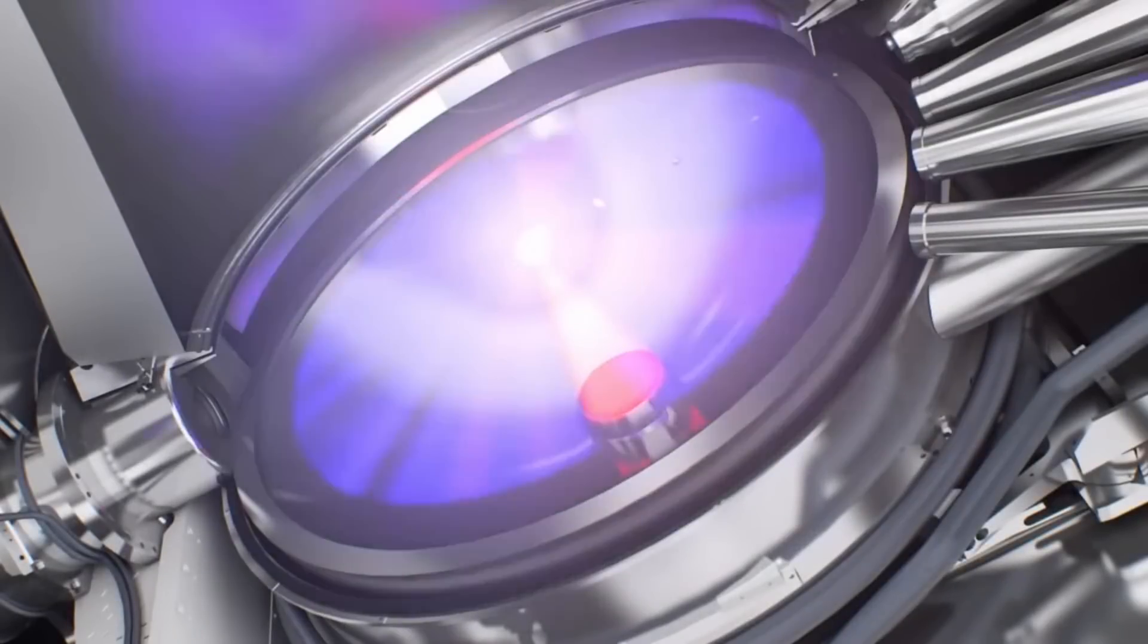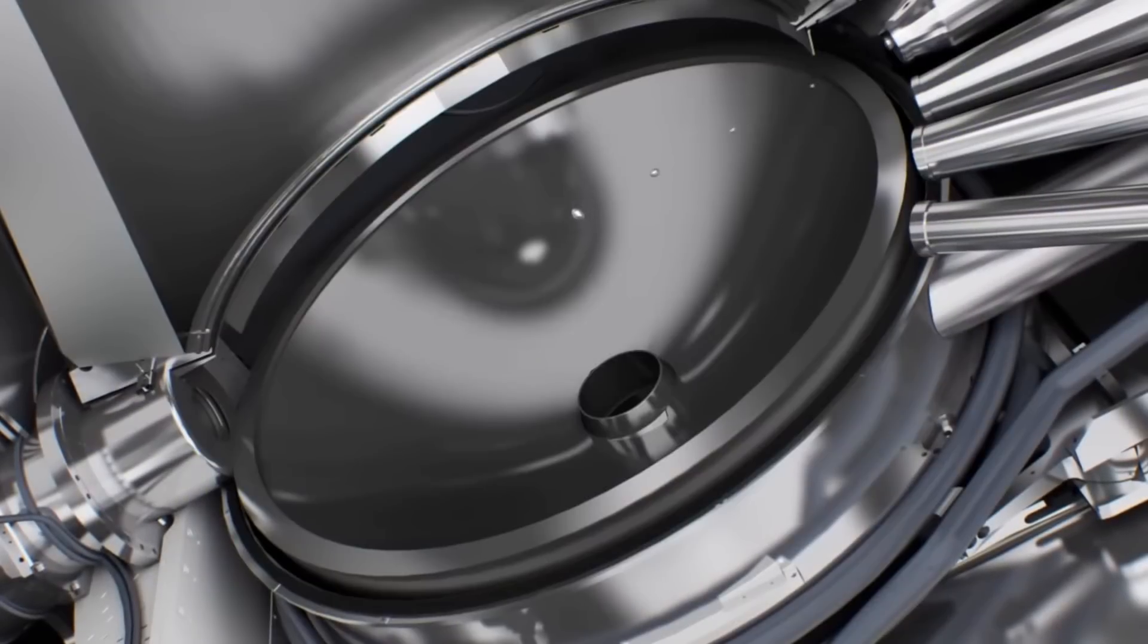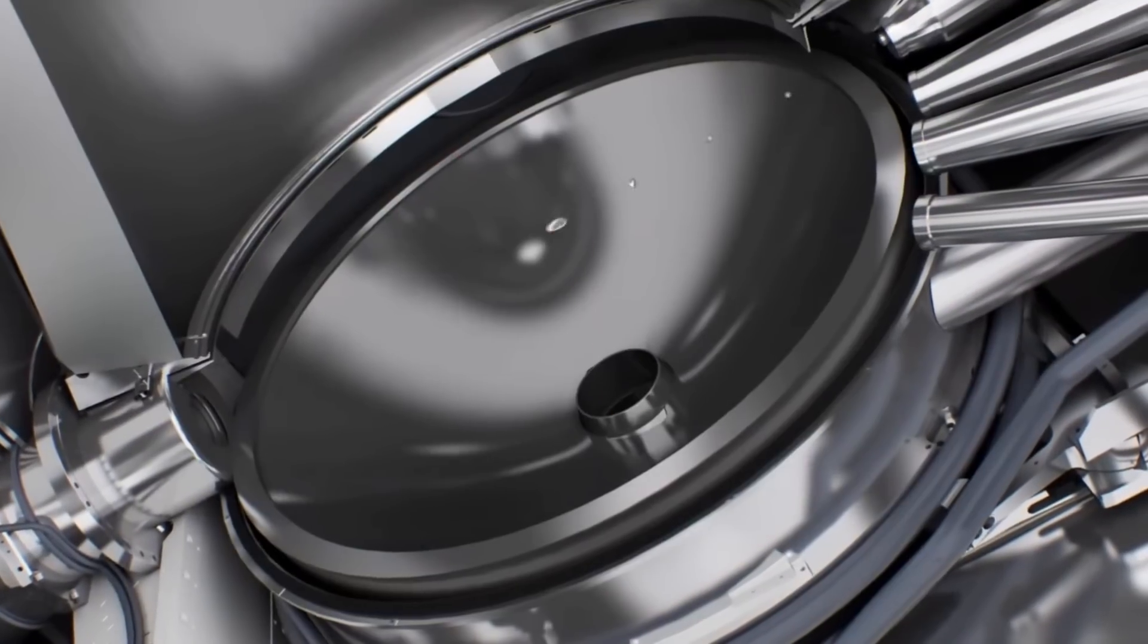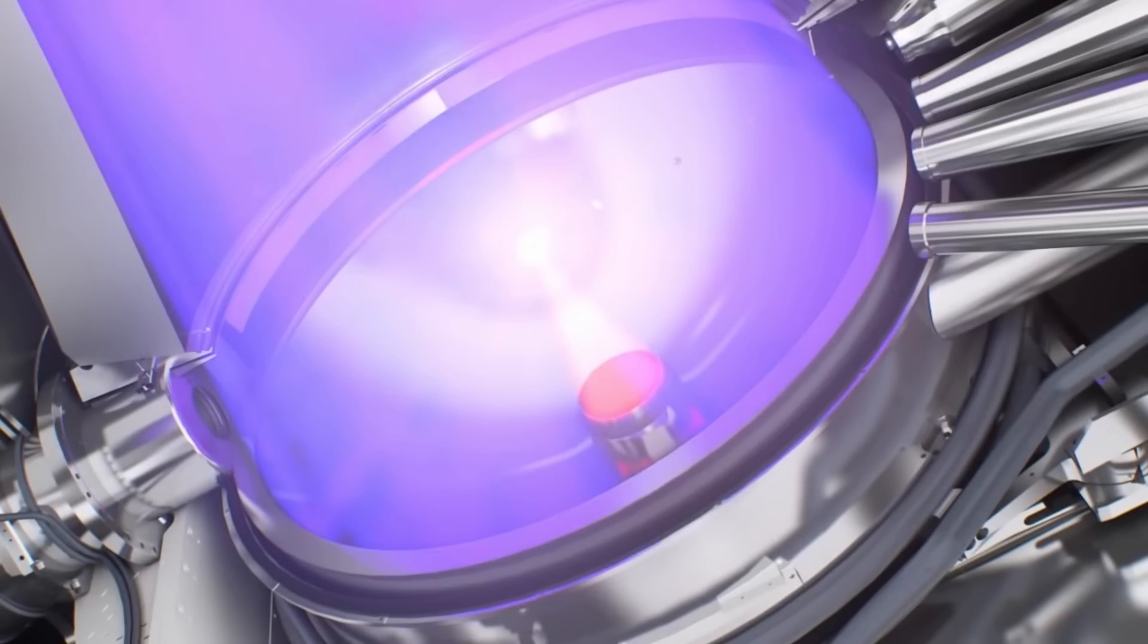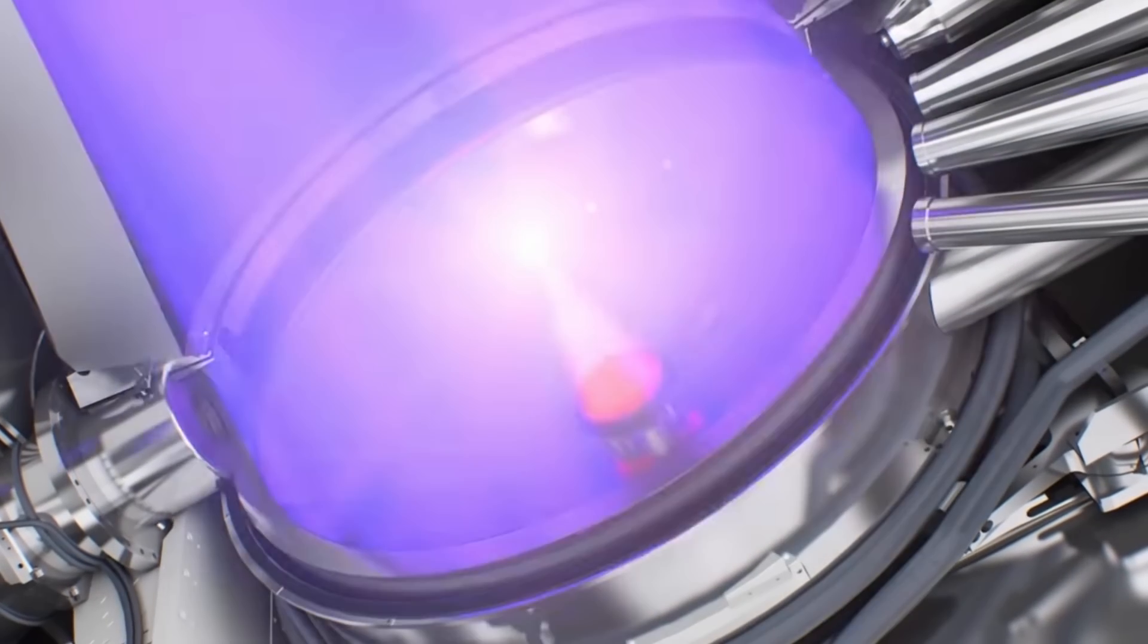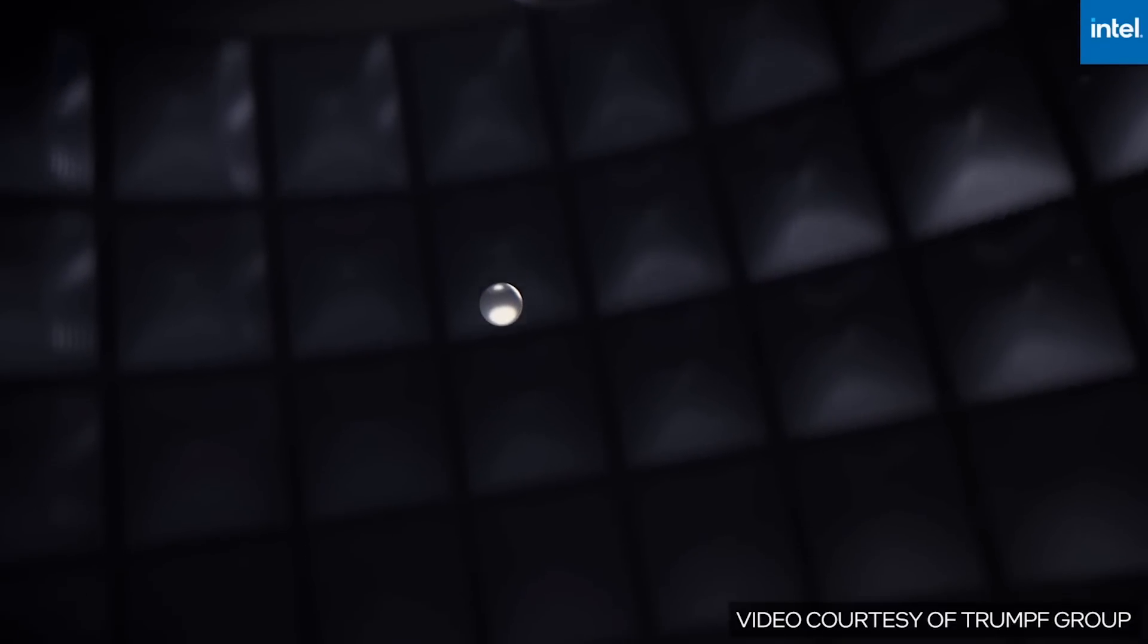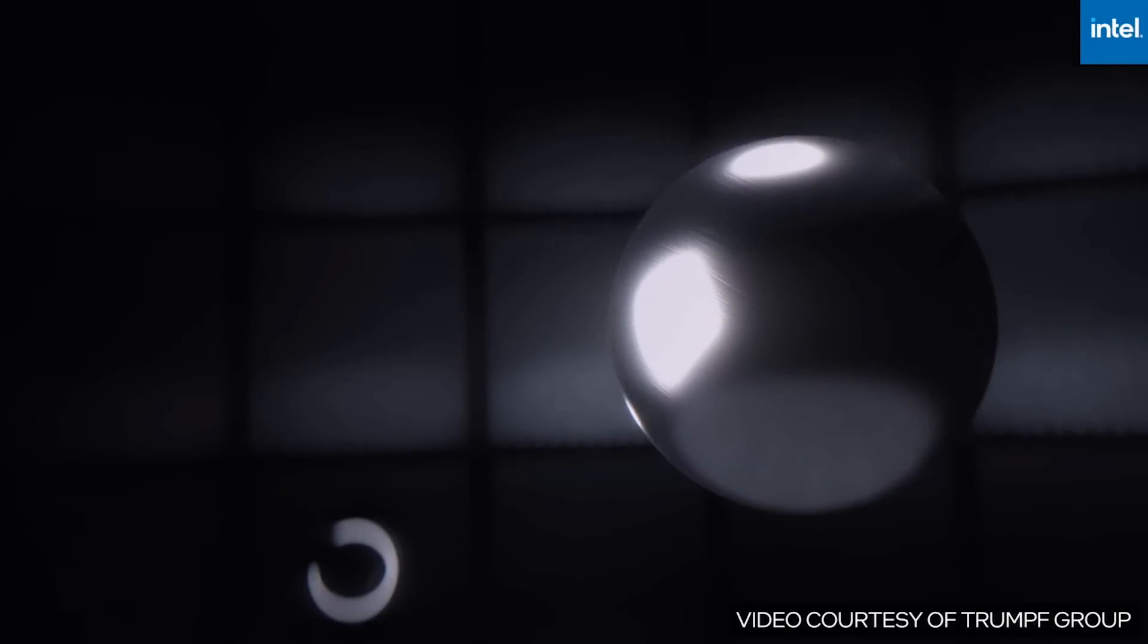The hardest part of the EUV machine to build, however, is the light source. This technology has faced a long road over the years. The light source in ASML's EUV machine uses tiny balls of tin, only about 30 microns wide, that are blasted not once but twice by the world's most powerful carbon dioxide lasers. The first laser blast primes the tin balls.